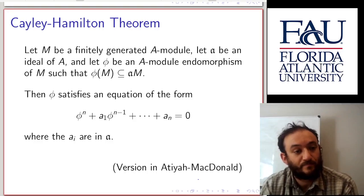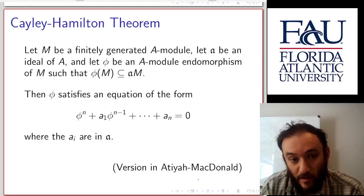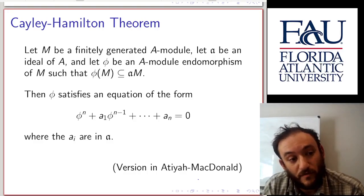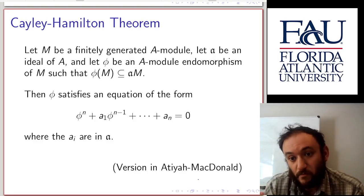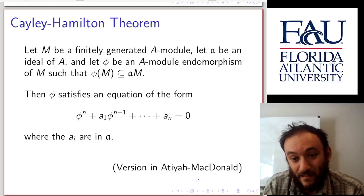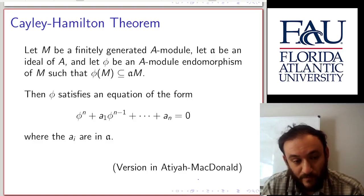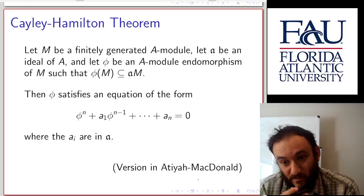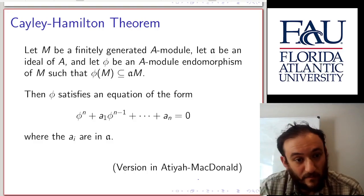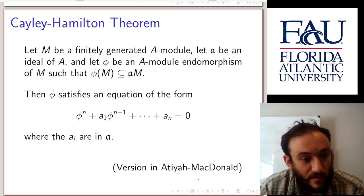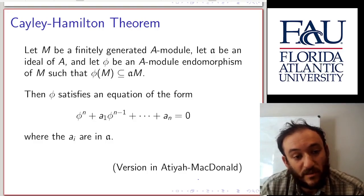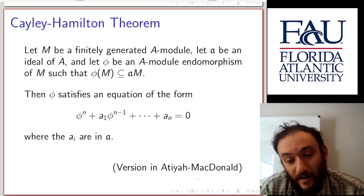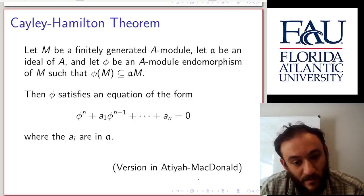Now we arrive at the Cayley-Hamilton theorem. We're going to let M be a finitely generated A-module, let a be an ideal of A, and let phi be an A-module endomorphism of M — that means a homomorphism of M to itself — such that phi(M) is contained in a·M. That means elements of M that can be expressed as a product of elements of the ideal a multiplied by elements of M, and finite sums of those. Then phi satisfies an equation of the form phi^n + a_1·phi^(n-1) + ... + a_n = 0, where the a_i are in the ideal a. This is the version found in Atiyah-MacDonald.